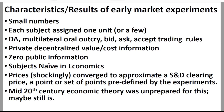All value and cost was completely decentralized — that was private to the individual. There was no public information except as people would voluntarily reveal it through their bids and asks or their acceptance of bids and asks as they appeared in the market. The subjects were utterly naive in economics — it was the first day of a principles class before they had had an opportunity to be contaminated by any reading in economics. Well, quite shockingly, they converged to approximate the supply and demand clearing price. It was a point predefined by the experimenter, and mid-20th century economic theory was completely unprepared for these results.